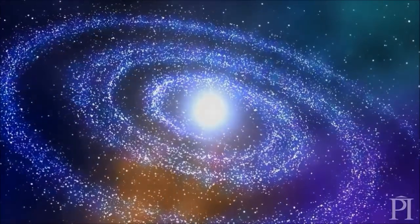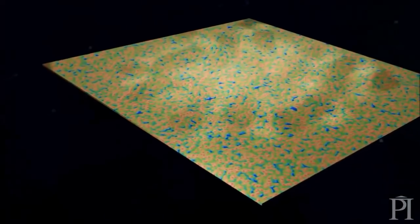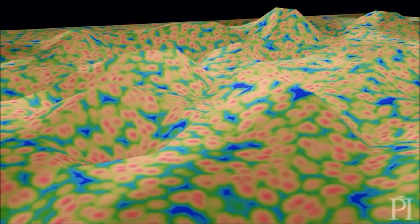There are these fluctuations during inflation of the field. Space is ripping apart so fast that it just excites space-time itself. You can't do it without making space-time a little bit crinkly, and those crinkles turn into galaxies and all the nice structure that we see in the universe today.